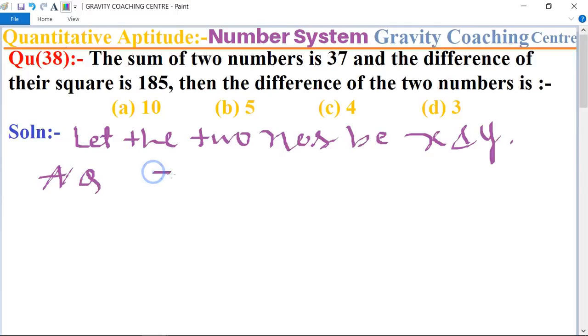Their sum is given: x + y = 37, and the difference of their squares means x² - y² = 185.